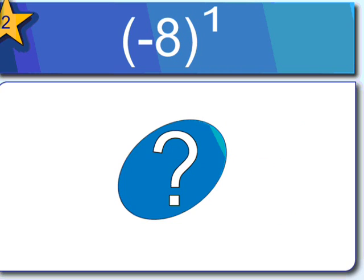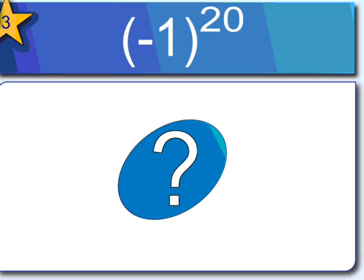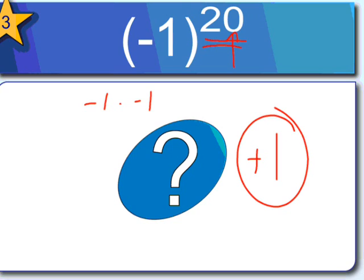Negative 8 to the first power — anything to the first power is just that number, which is negative 8. We have an odd exponent, so we have a negative result. Negative 1 to the 20th power: I could write negative 1 times itself 20 times, but I don't need to. Because the exponent is an even number, I know the result is going to be positive 1.